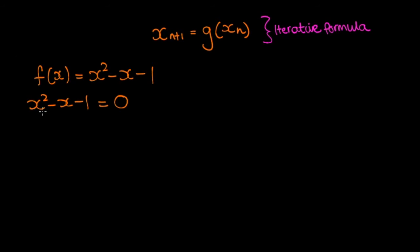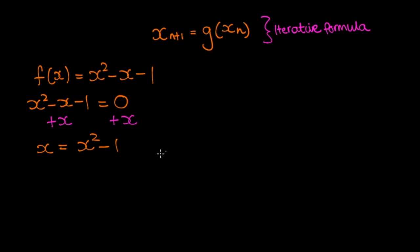The next step is to make x the subject of this equation. If we add x to both sides, then we're left with x = x² - 1. Comparing our equation to the general iterative formula, we can see that g(x) = x² - 1. So the iterative formula for this particular case is x_{n+1} = x_n² - 1.